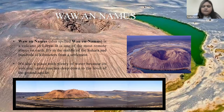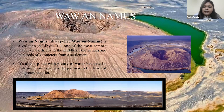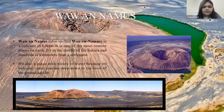Waw an Namus is a volcano in Libya and one of the most remote places on Earth, located in the middle of the Sahara, hundreds of kilometers from any settlement. It is also a place with plenty of water because its volcanic crater reaches deep down to the level of the groundwater aquifer. We will now see some videos about these places to know them better.